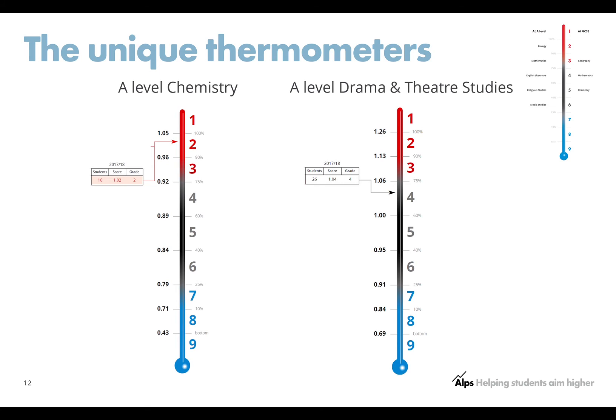So to summarize: in order to set your subject targets, use the MEG, work out what a score of 1.00 gets you on your unique thermometer, and then target set according to that — either at the MEG or above the MEG. The number of students that you target set above the MEG will depend on what your thermometer looks like.